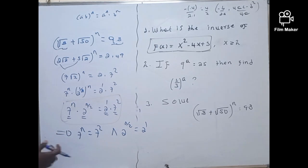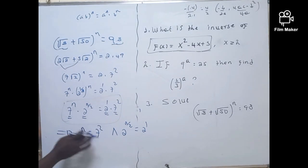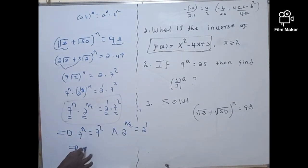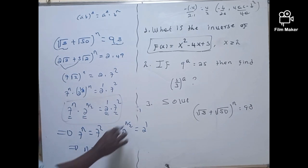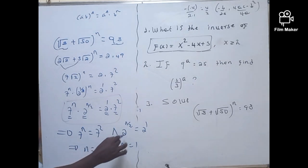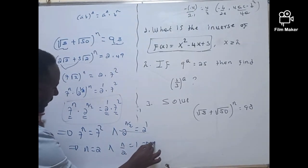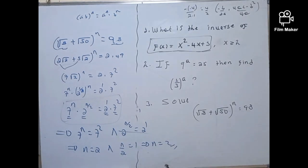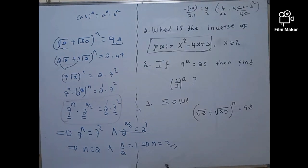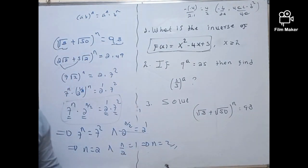Both conditions confirm that N = 2. If N is exactly 2, then the left side equals the right side, confirming the solution. The value of N is 2. Thank you for watching.